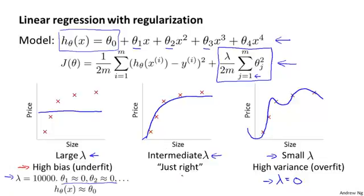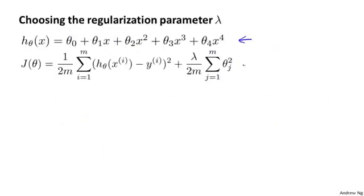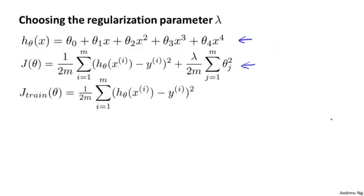So how can we automatically choose a good value for the regularization parameter lambda? Here is our model and our learning algorithm's objective. For the setting where we're using regularization, let me define J_train of theta to be something different — the optimization objective but without the regularization term. When we're using regularization with this extra lambda term, we're going to define J_train, my training set error, to be just my sum of squared errors on the training set, without taking into account the regularization term.